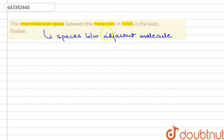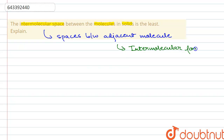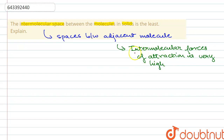Now, intermolecular spaces are less in the case of solids because the intermolecular forces of attraction are very high in the case of solids. So what are intermolecular forces of attraction? They are the attractive force that a molecule exhibits on an adjacent molecule.